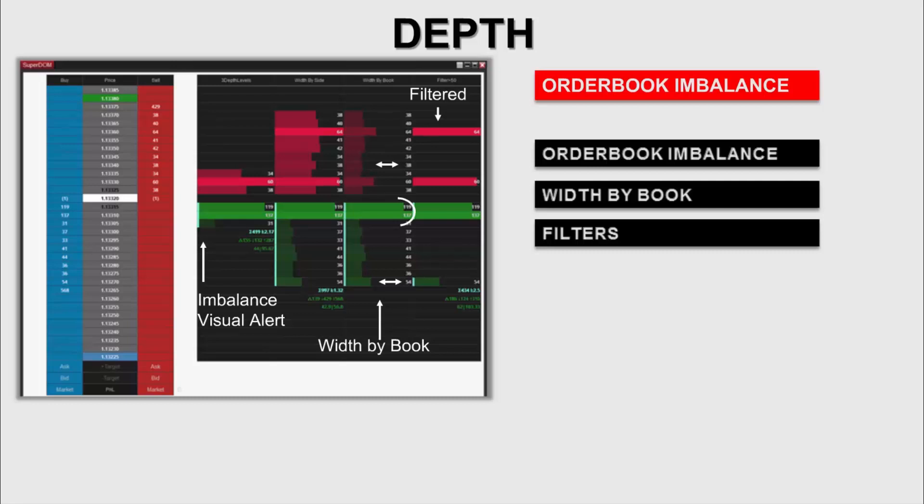As you can see on the third column, we got width by book. And while the ask side seems quite big on the second column, by using width by book, you can clearly see that those bids right there really are different and really are big compared to the overall book.